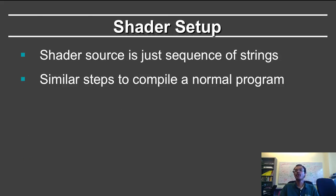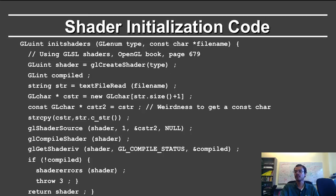So what is a shader? It's just source code which is a sequence of strings. As far as the C program goes, it's a sequence of strings, and you just compile these strings just as you would compile a normal program.